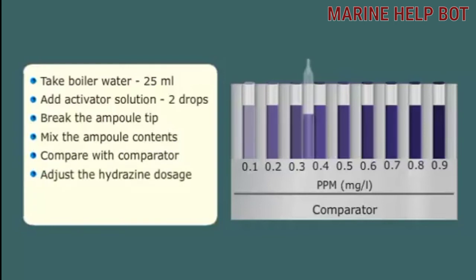Adjust hydrazine dosage to the boiler water so that hydrazine reserve is maintained between 0.1 to 1 parts per million.